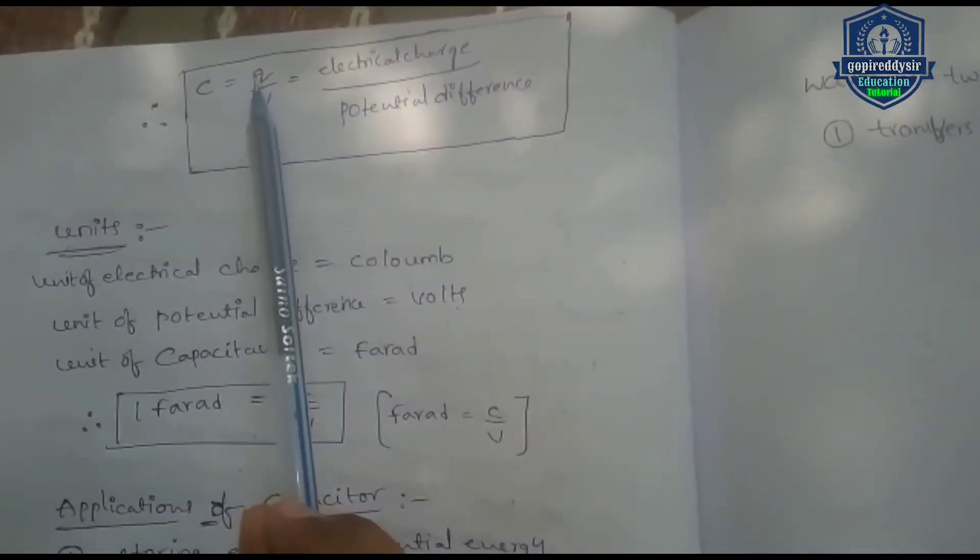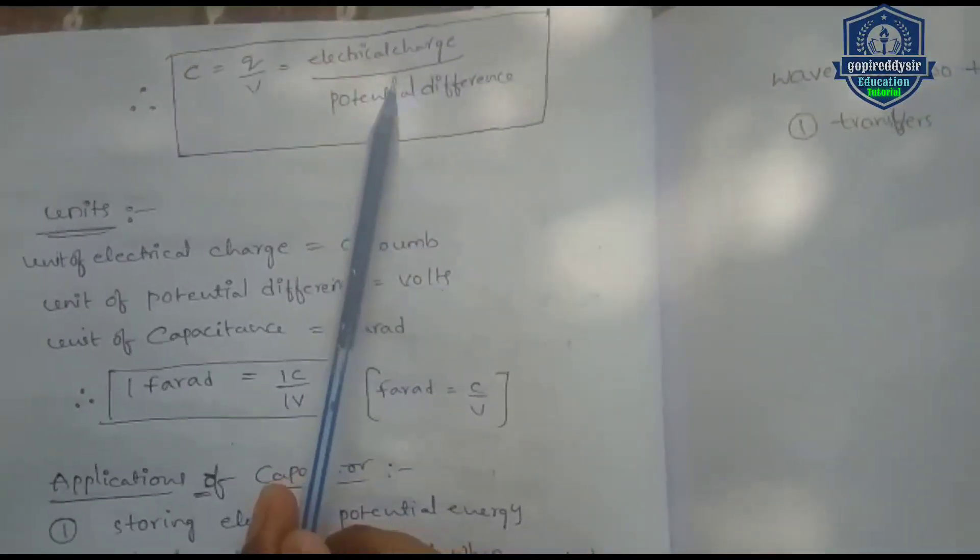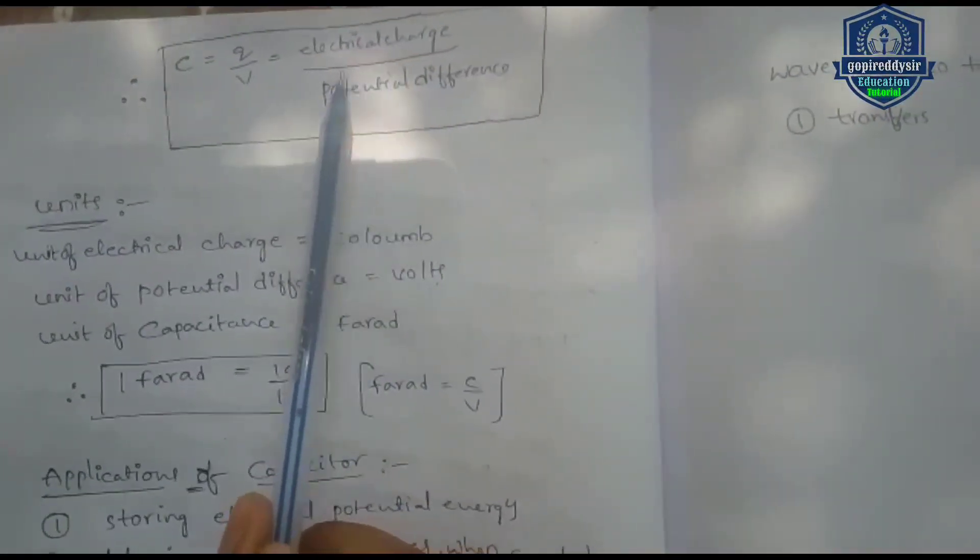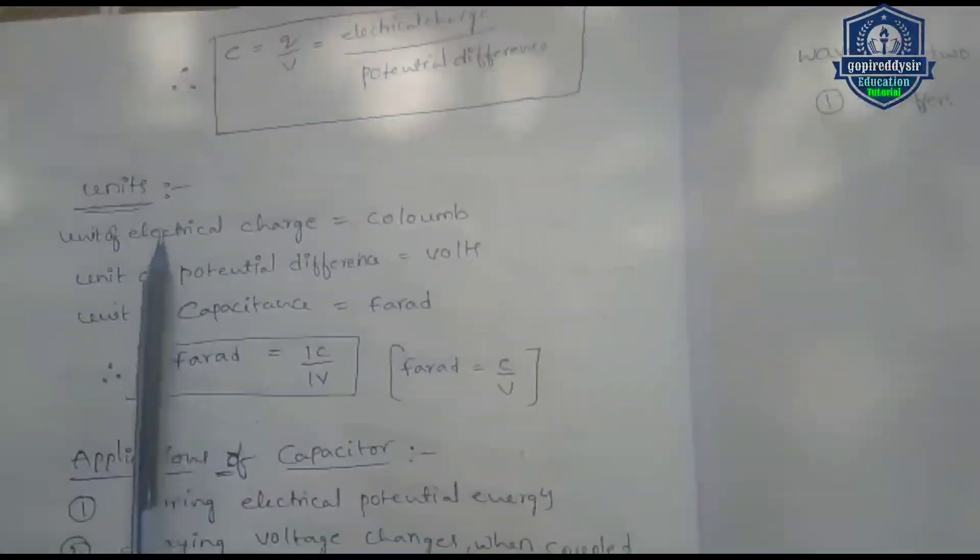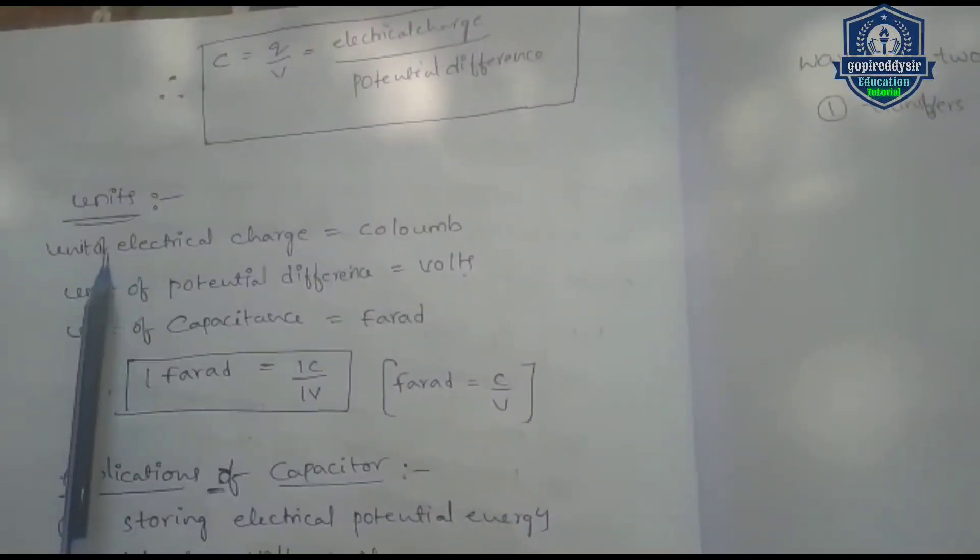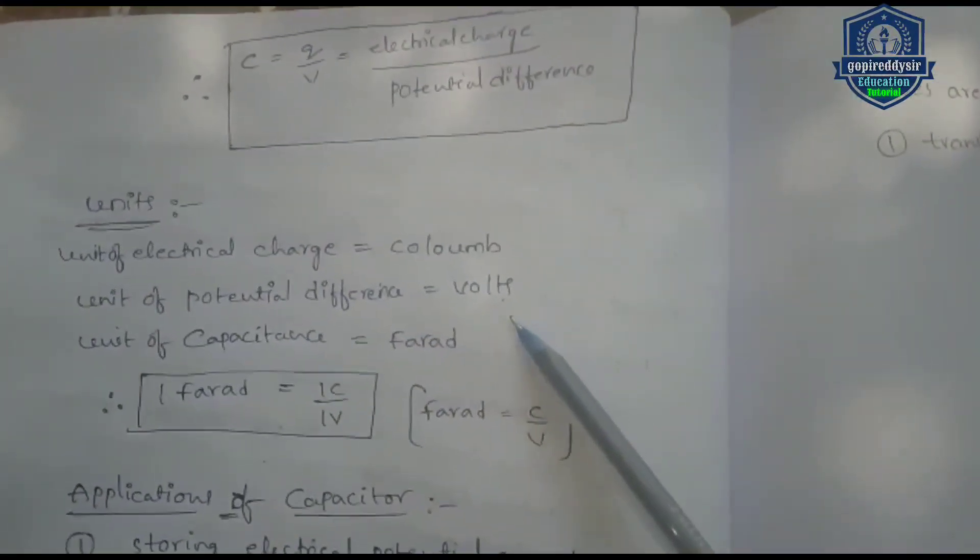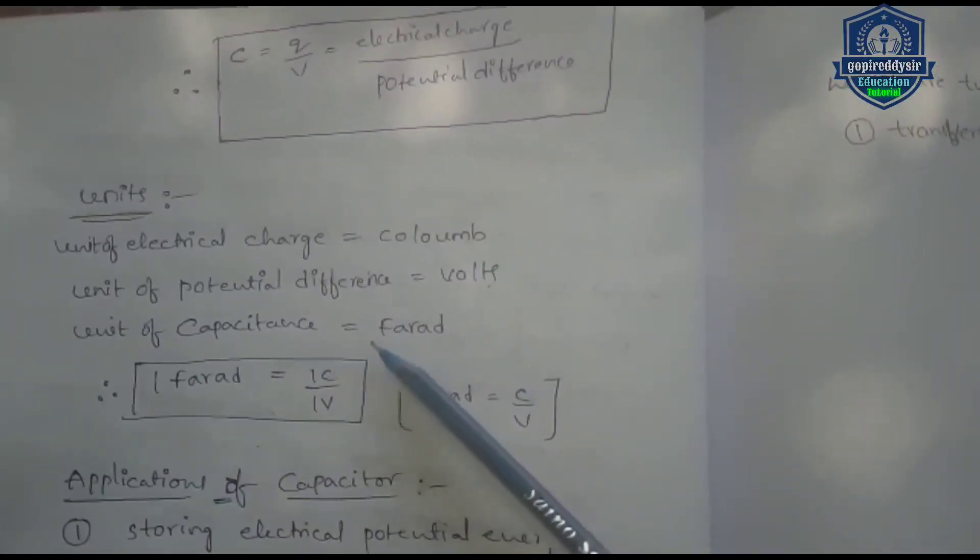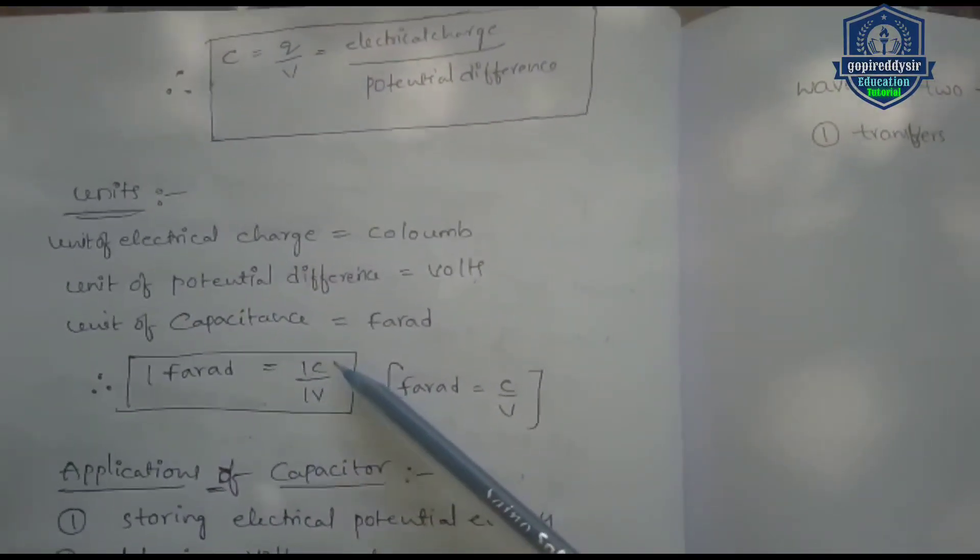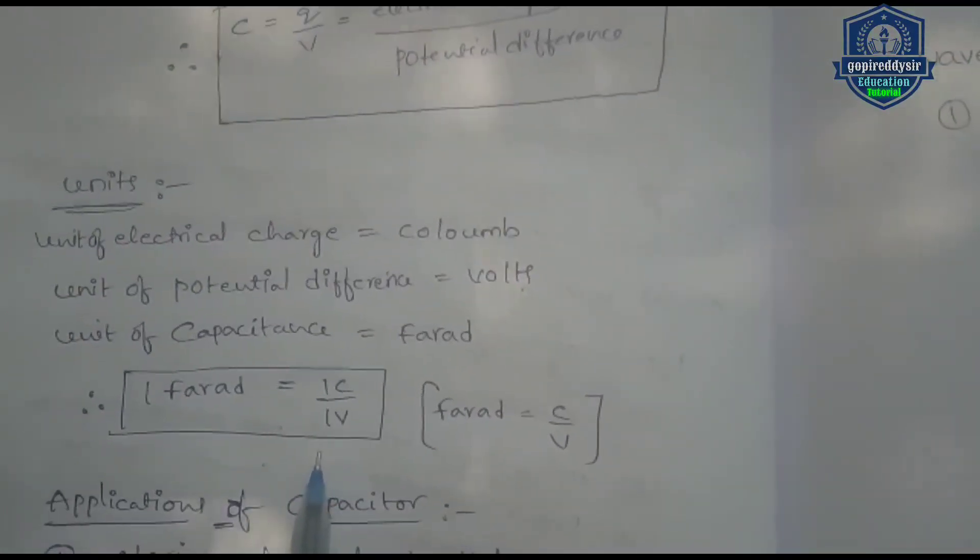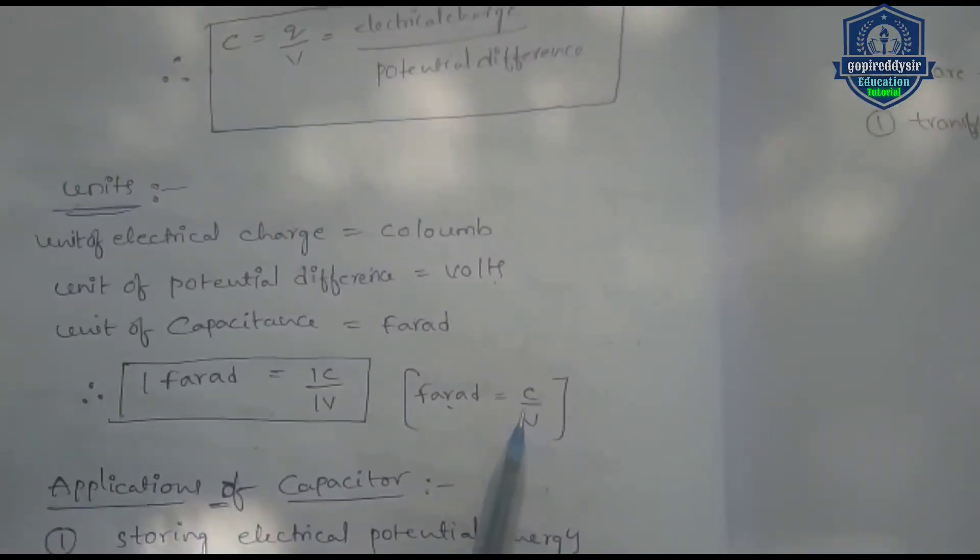Capacitance C equals Q divided by V, the ratio of electrical charge to potential difference. So electrical charge of the two capacitor conductors to potential difference is called capacitance. Unit of electrical charge is denoted by coulombs, unit of potential difference is denoted by volts. So unit of capacitance is denoted by farad. One farad equals the ratio of coulombs per volt.